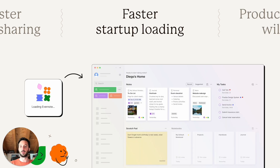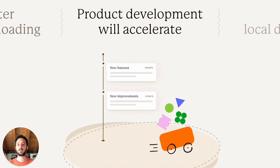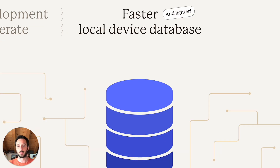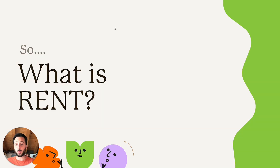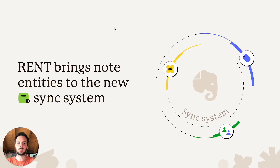Launching Evernote is also going to be snappier, and the rate at which we are able to release product improvements and updates will also accelerate. Plus, on your device your database is going to be faster, lighter, and smaller. So what is RENT? RENT is a new way to sync metadata and content inside Evernote.